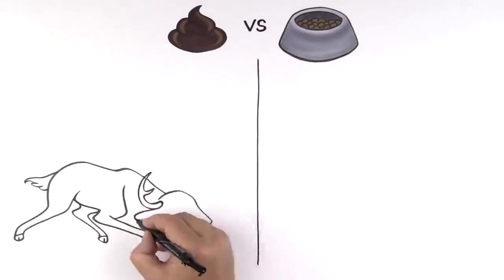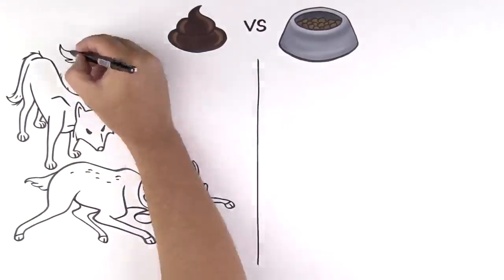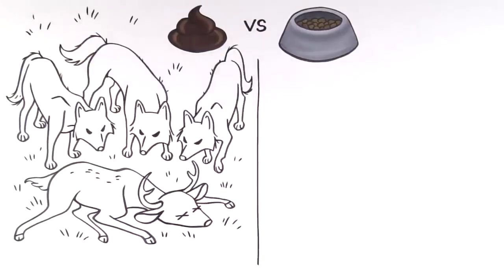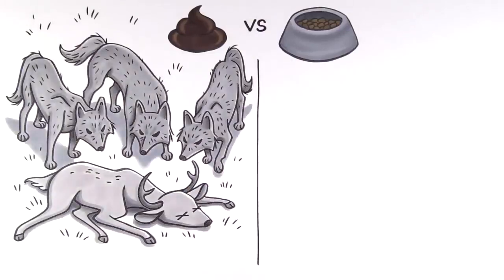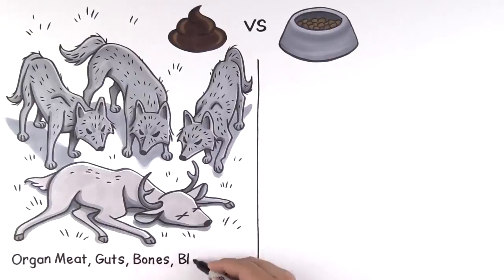So why would a dog choose poop over a nice fresh bowl of kibble? Let's look to nature. In the wild, a dog's diet works with the ecosystem. The dog eats the prey, all of the prey: vital organs, guts, bones, and everything in between.